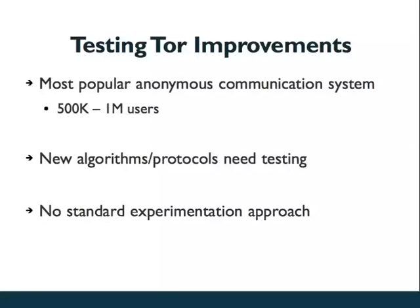TOR is an extremely popular anonymous communication system servicing between 500,000 and a million users. Since TOR is so popular, it's also a popular research system. There have been lots of proposals on ways to improve both TOR's performance and security. New algorithms and protocols that are proposed need a way to test out these ideas before adding them into the TOR network. Because TOR services so many users, and these users are usually using TOR for sensitive reasons, it's important that we don't compromise their anonymity.